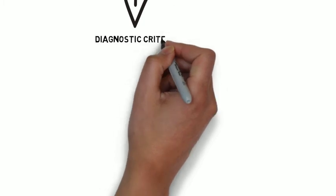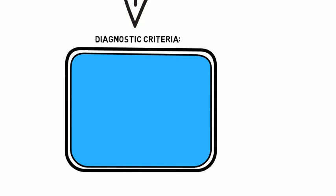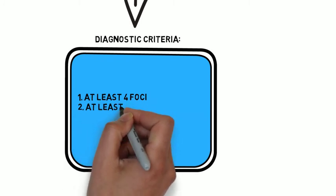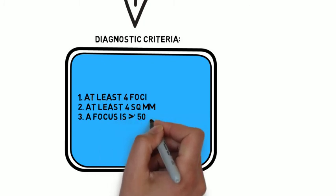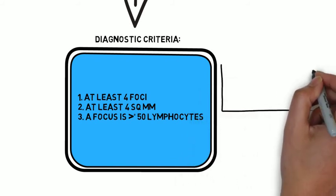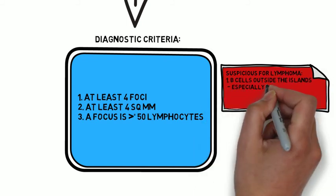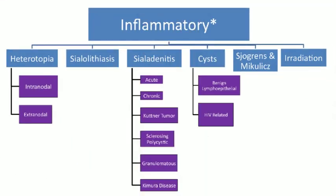Diagnostic criteria for Sjogren's disease according to Sternberg: at least four foci in at least four square millimeters, where a focus is defined as 50 or more lymphocytes. Features suspicious for lymphoma, on the other hand, include B cells outside the islands — especially in anastomotic bands — and the presence of plasma cells with or without Dutcher bodies. Keep both sets of criteria in mind.